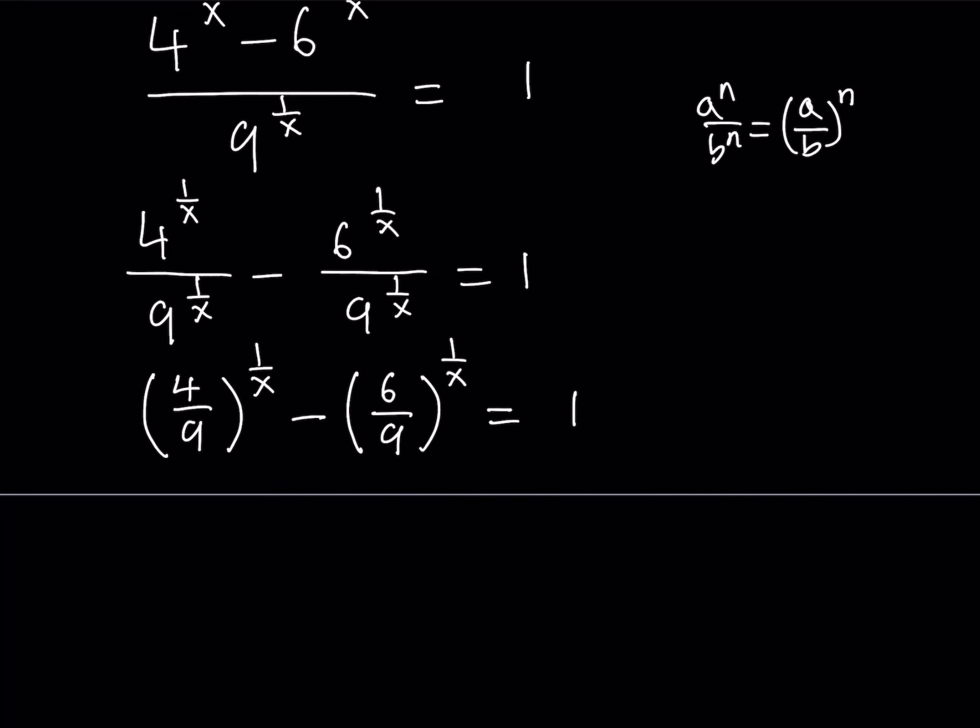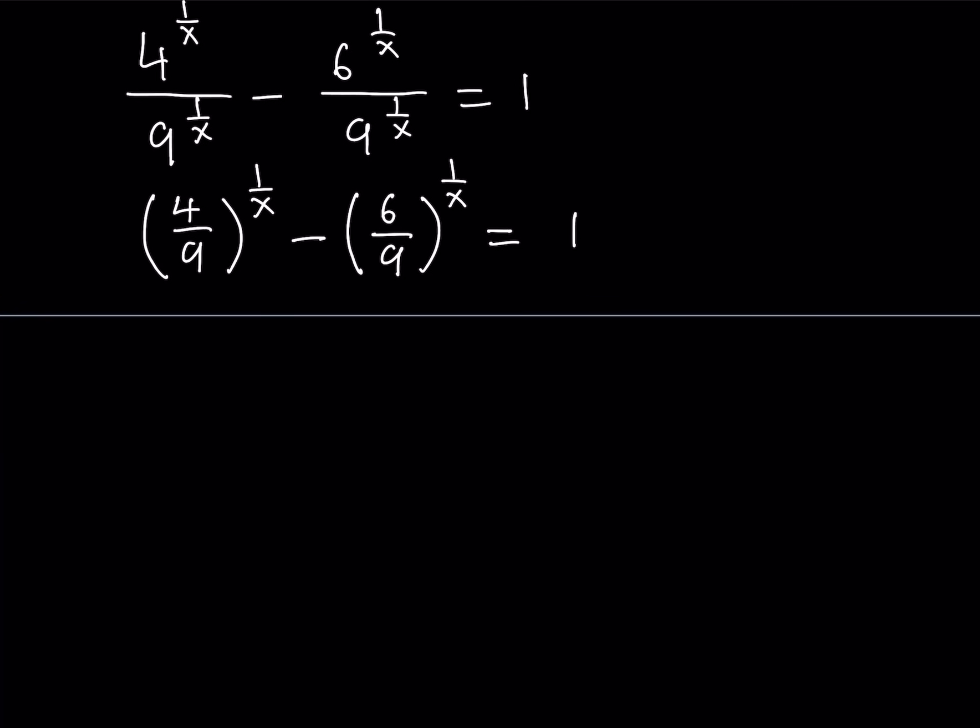Now, notice that in both fractions, our exponents are the same, which means that we can just write them with a common exponent. In other words, using the property a to the power n divided by b to the power n as a over b to the power n. So, I can write this as 4 over 9 to the power 1 over x minus 6 over 9 to the power 1 over x, and that equals 1.